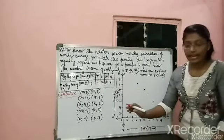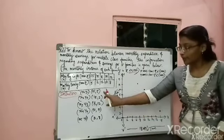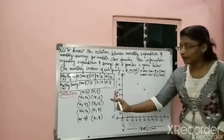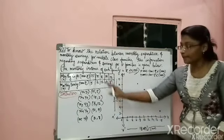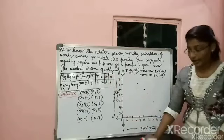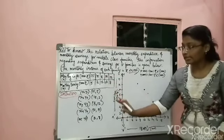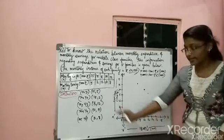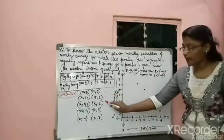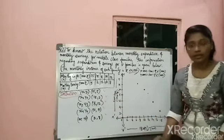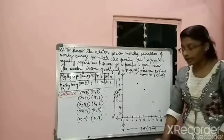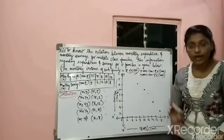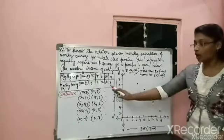While starting, mention X1, Y1 for the first family: 15 and 5. For the second family, X2, Y2 is 18 and 2. Like this mention the coordinate pairs for every family. Then take your graph sheet and plot this data accordingly.